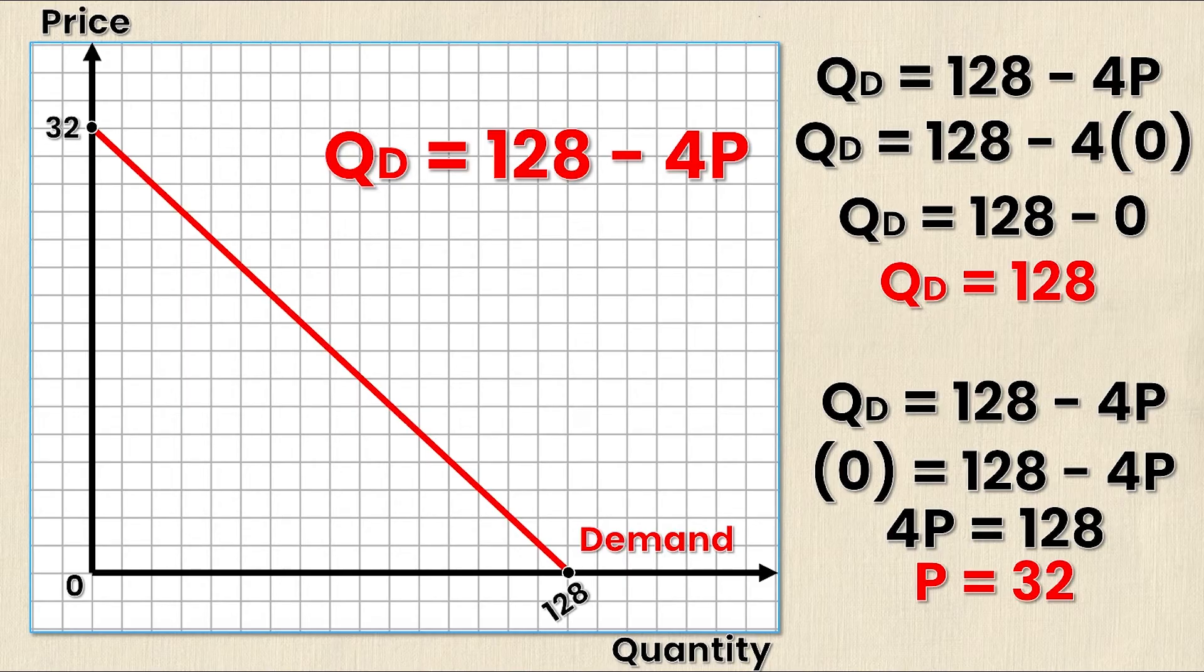You know that for a demand curve that looks like this the maximum price is 32 and the maximum quantity is 128, and you know that just by looking at the intercepts. That means that you could take any price from zero to 32 and find its corresponding quantity. You could also take any quantity from zero to 128 and find its corresponding price. Let me show you how it's done.